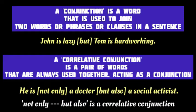But what is a Correlative Conjunction? The word 'correlative' means naturally or mutually related. So, a Correlative Conjunction is a pair of words or expressions that does the work of a conjunction. In short, a Correlative Conjunction has two parts, containing two words or expressions that are always used together.